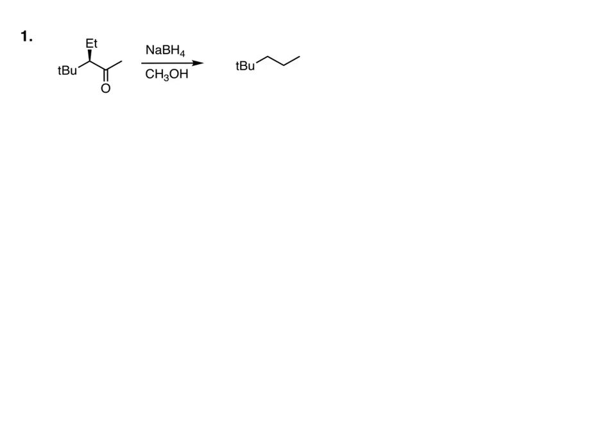Here's our first practice problem. In this case we have our chiral center at the alpha carbon. We don't have a chelating atom, and the metal is sodium, which is not a good chelating metal. So this is just going to follow the simple Felkin-Anh model. I gave a product template structure so that when you check your answers, yours will match mine exactly. What we want to do is think about a Newman projection viewing along the carbonyl, and I'll go ahead and draw in the back hydrogen.